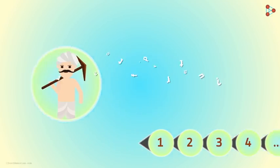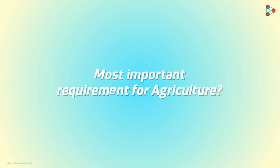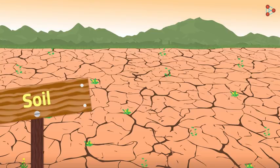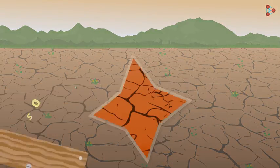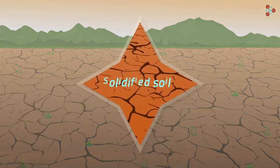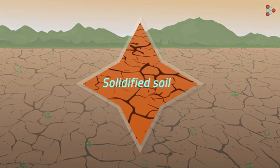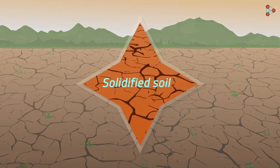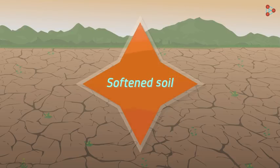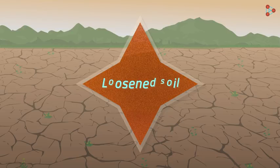What do you think is the most important requirement for agriculture? Soil, that's right. But do you know that soil needs to be prepared for crop production? Soil is usually found solidified into hard chunks of soil mass. This soil needs to be softened and loosened.